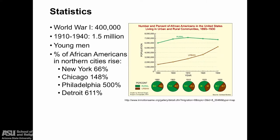Great Migration statistics really show this wave of migration that happened at the beginning of the 20th century. During World War I alone, 400,000 African Americans migrated from the South to northern cities. In total, from 1910 to 1940, 1.5 million would migrate. Young men were often the pioneers of this migration, going first and then sending for their families. From 1910 to 1920, the percentage of African Americans in northern cities rose dramatically: by 66% in New York, 148% in Chicago, 500% in Philadelphia, and 611% in Detroit.